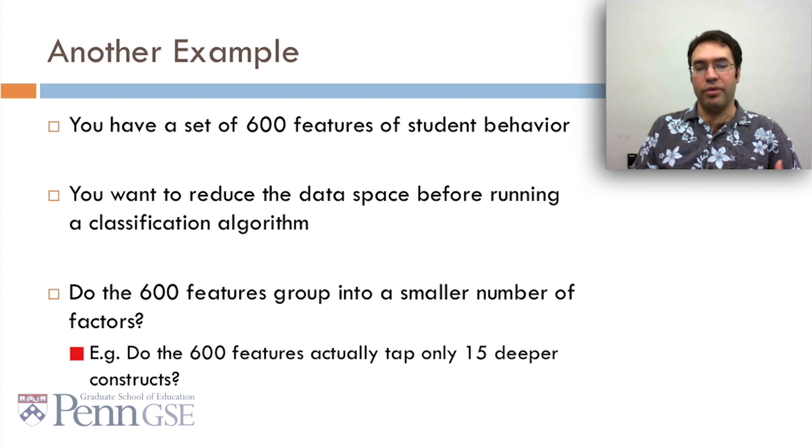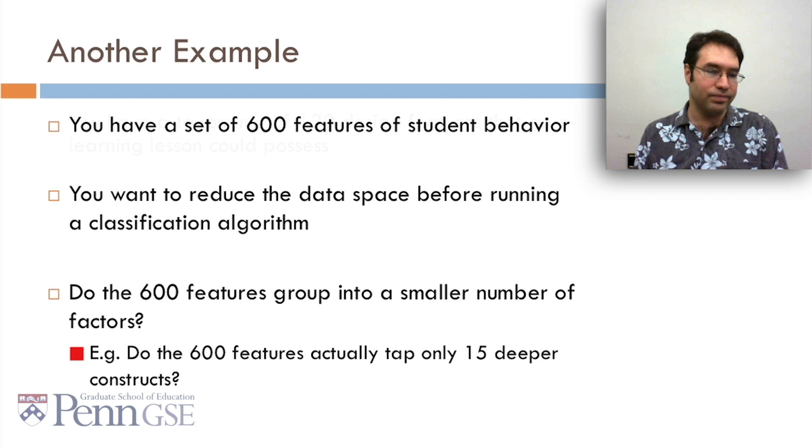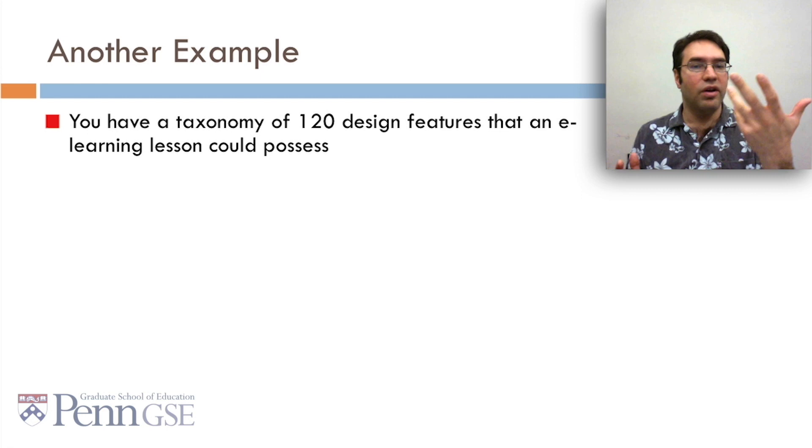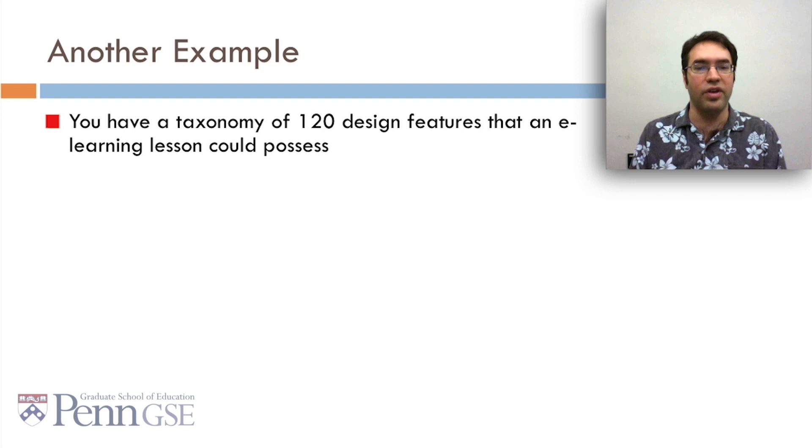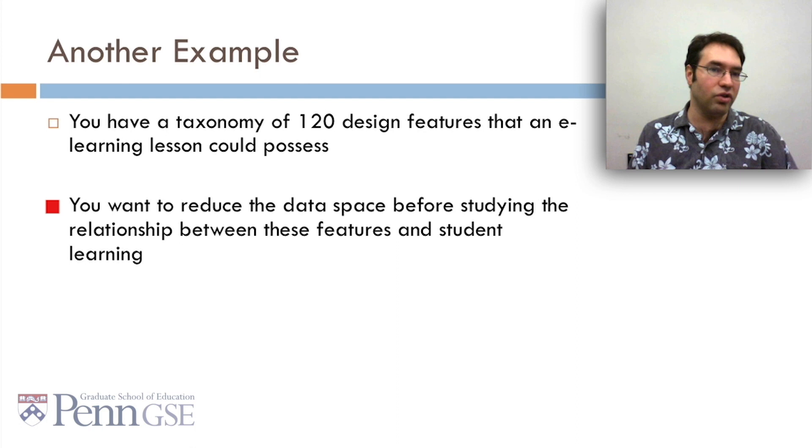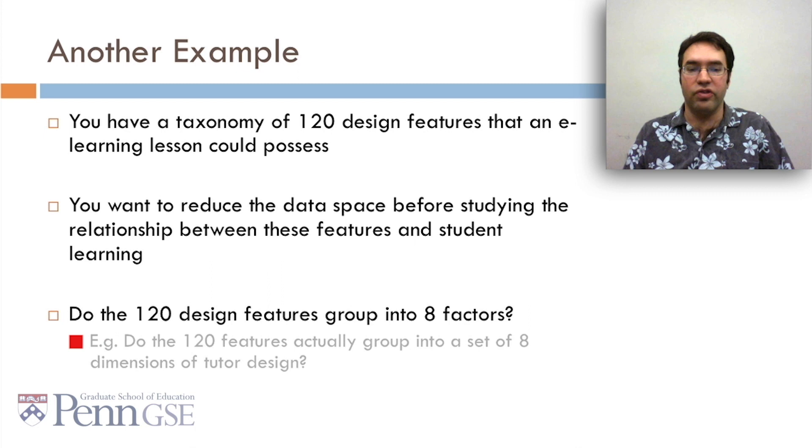And a third example, one that I've done a little bit of work along these lines, is let's say you have a taxonomy of 120 design features that an e-learning system, an e-learning lesson, could possess. You want to reduce the data space before studying the relationship between these features and student learning. So you say, do the 120 design features perhaps group into eight factors? Or in other words, do the 120 features actually group into a set of eight dimensions of tutor design? Or eight ways that designers consider when they're building these tutor lessons?